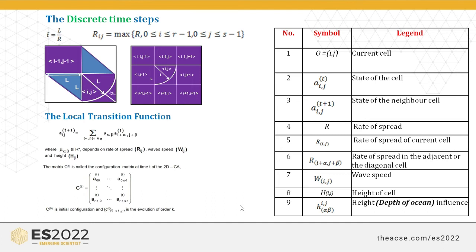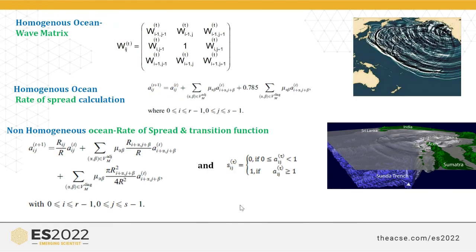The wave height, depth, and versions are included in the calculation. The homogeneous wave matrix considers the tsunami wave travelling from source to destination without any disturbance — no rocks, islands, or obstacles — as the homogeneous version. The rate of spread calculation formula and algorithm are also involved for the non-homogeneous version's rate of spread transition functions, which account for obstacles such as those between Sumatra and India, Sri Lanka, and other landmasses.